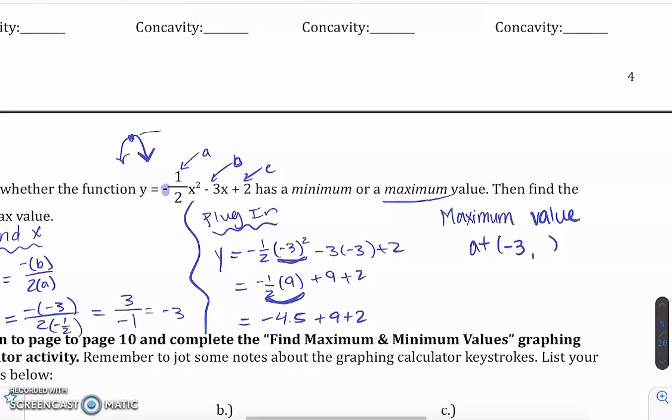So your vertex is going to be six and a half. Well, your y value of your vertex is going to be six and a half. So you've got a maximum value at the ordered pair, negative three, six and a half.